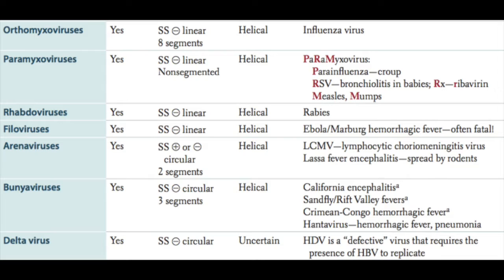The paramyxoviruses include parainfluenza, which causes croup; RSV, which is associated with bronchiolitis in babies; rubeola or measles; and mumps. Just looking at the family paramyxoviruses, you have P, R, and M — so parainfluenza, RSV, measles, and mumps.